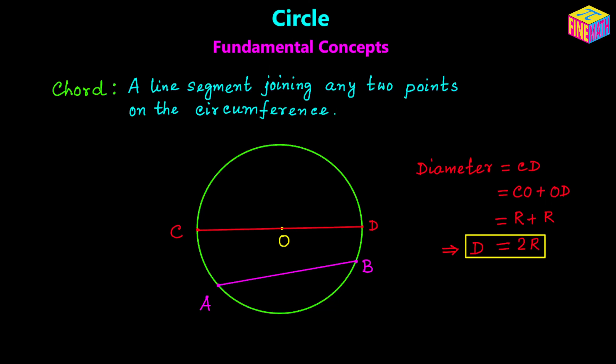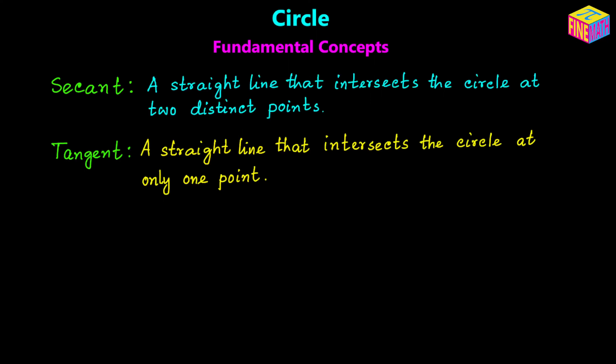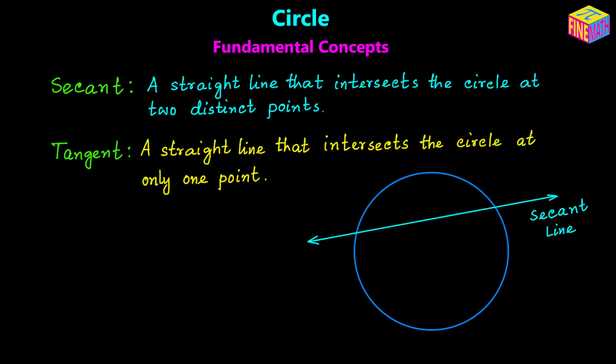Next we are going to talk about secant line and tangent. A secant is a straight line that intersects the circle at two distinct points. Here I have a straight line which intersects the circle at two distinct points, A and B — that straight line is called a secant or secant line. It extends all the way to infinity in both directions, unlike a chord which is just a line segment. So secant is a straight line extending to infinity, but it cuts the circle at two distinct points.